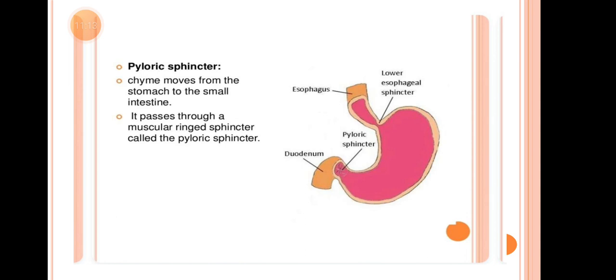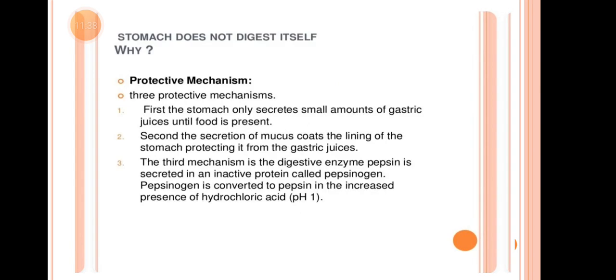Next is the Pyloric Sphincter. Chyme moves from the stomach to the small intestine by passing through a muscular ring sphincter called the pyloric sphincter, located between the stomach and the duodenum.